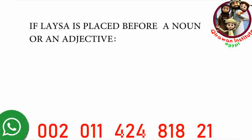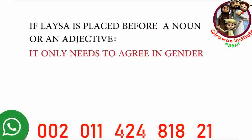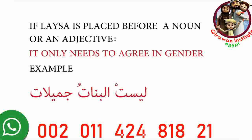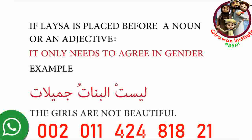If leysa is placed before a noun or an adjective, it only needs to agree in gender. Let's look at an example: leysit al-binatu jamilatin — 'the girls are not beautiful.' Here the subject, al-mubtada, al-binatu, is feminine and plural, but when we choose our form of leysa we use leysit, the feminine singular form, because we're adding it before the subject. Arabic dialects often use this pattern because it simplifies things — you'll only have to remember two forms, leysa and leysit, instead of all other forms of the verb.